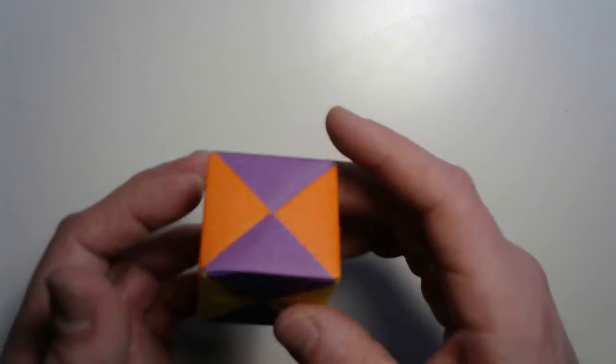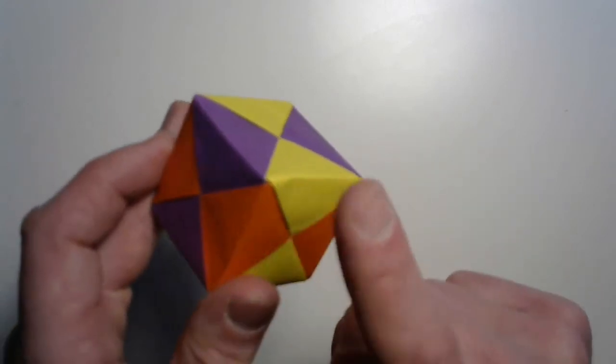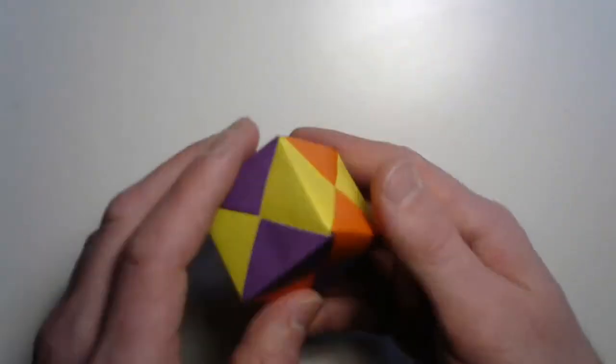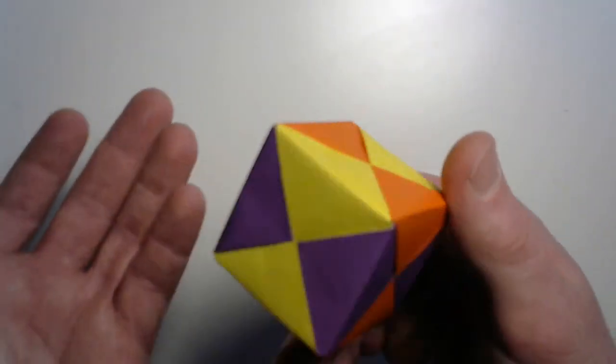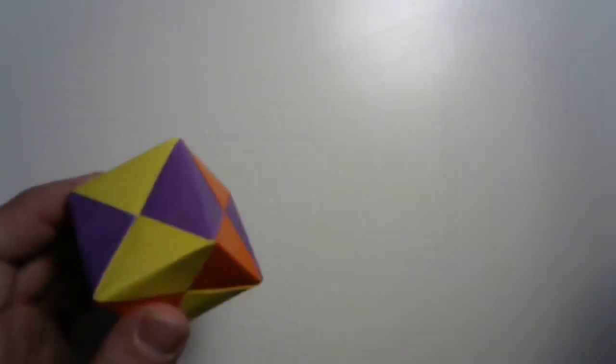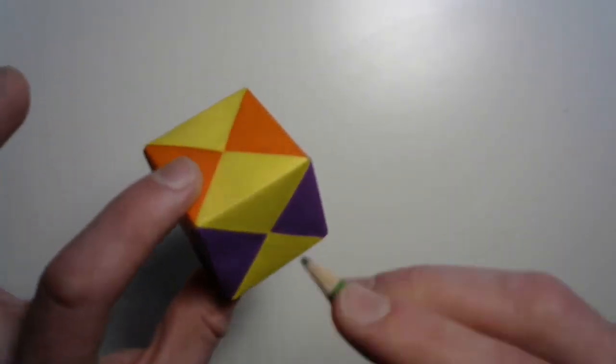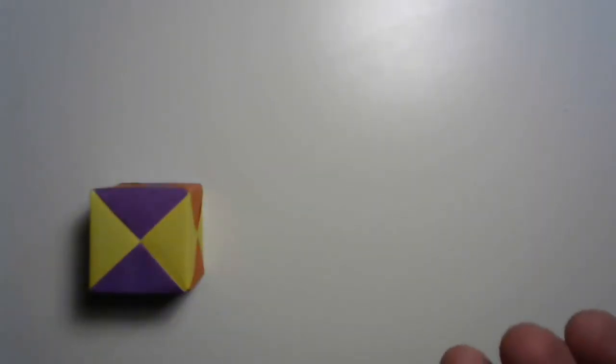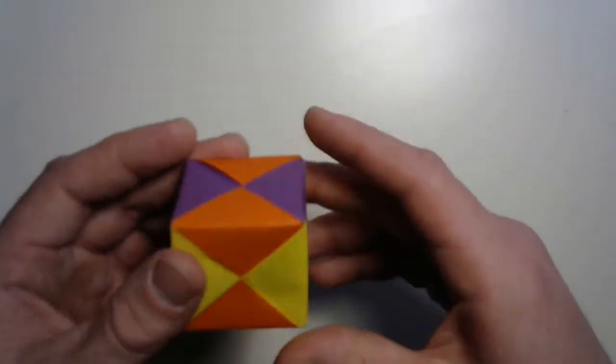Now, you could give this as a gift. You could even put a present inside of it. Maybe even a jingle bell and throw it around for your cat to play with. But also, if you made it out of white paper, think about taking a colored pencil or a marker and maybe writing some numbers or dots on there. And you've got a dice to play for your favorite game board. How cool is that?